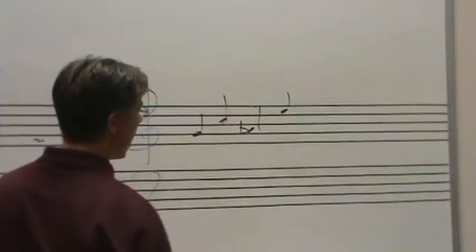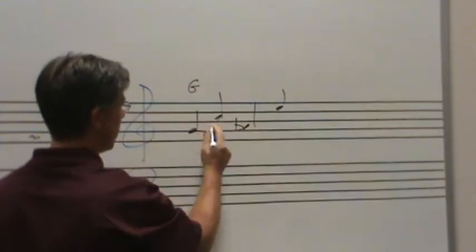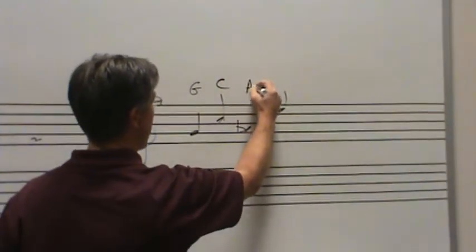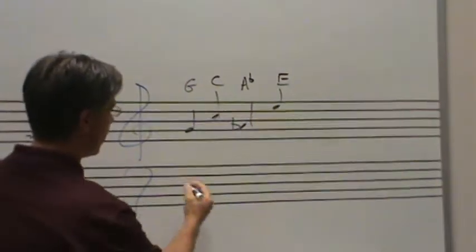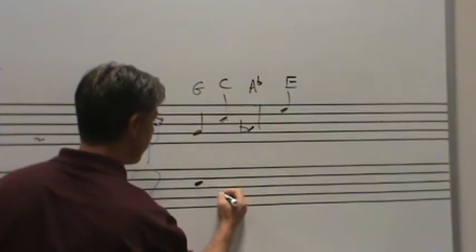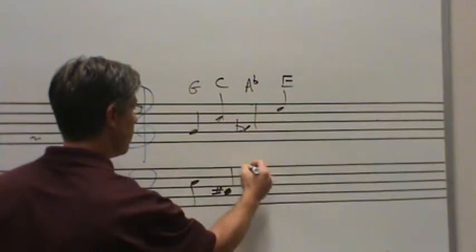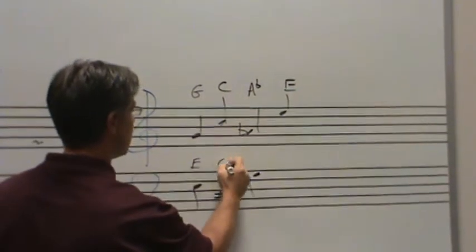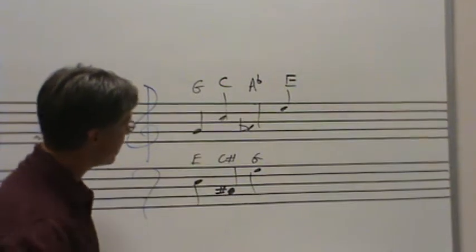And let's do something like that. And your job is simply to name the note. You'll look at this note and be able to tell me it's a G. You'll look at this, it's a C. This one happens to be an A flat. And this one happens to be an E. There will be something very similar in the bass clef. Something like this. And your job will be to identify this as an E, this as a C sharp, and this as a G. I think you get the idea there.